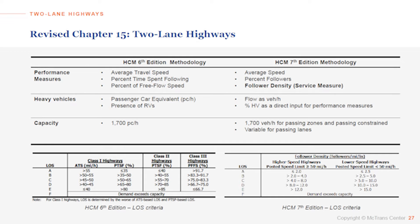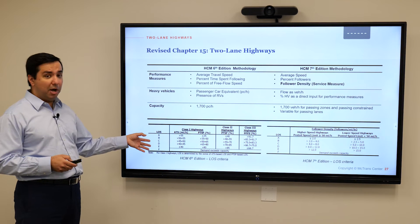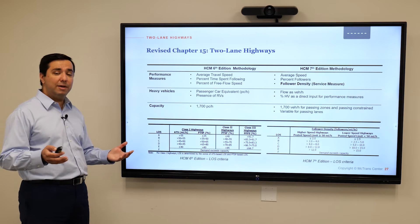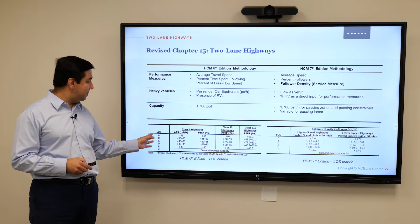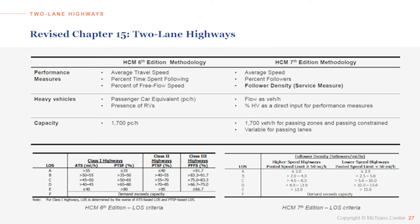Speaking of capacities, previously HCM would use 1,700 passenger cars per hour. Now by default it is 1,700 vehicles per hour. If you are dealing with passing lane segments, there is a lookup table to find the capacity numbers, but they are in the same range. At the bottom of this slide, I'm showing two level of service determination tables for HCM 6 and 7 editions. As you can see, the service measures are different and there are no longer any classifications, so it is simpler and more efficient to use this methodology.